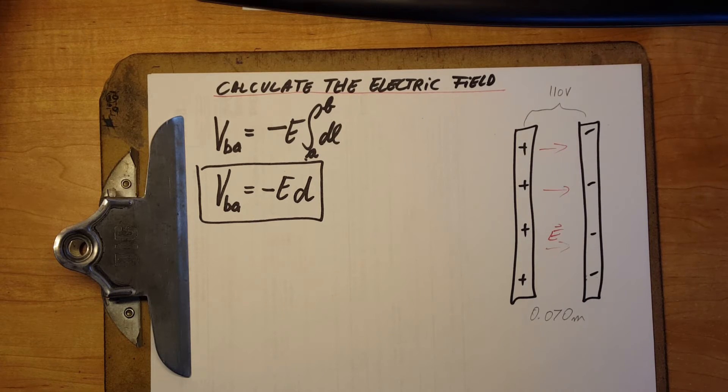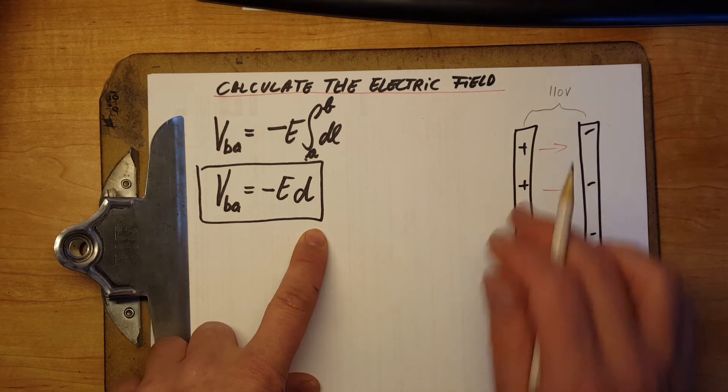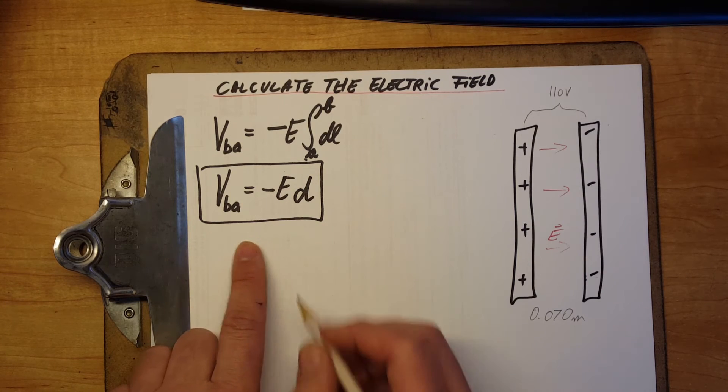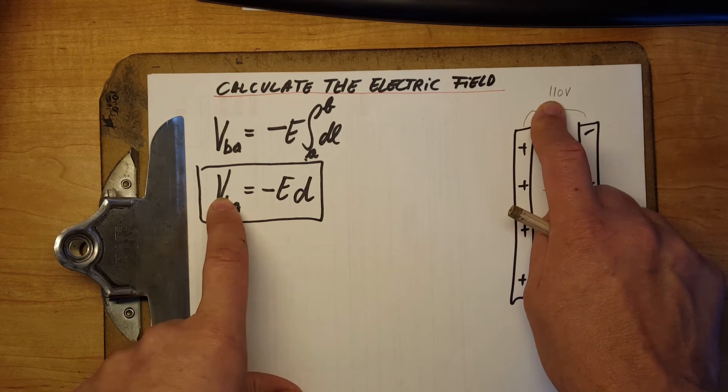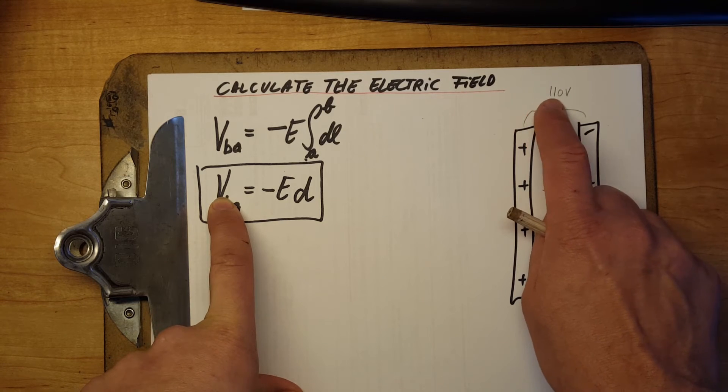So, here we're gonna apply our formula. We're gonna solve for E first. And our V, when we're gonna plug in, we're gonna plug in negative 110 volts.